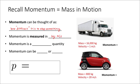Now momentum is a vector quantity, and what that means is that momentum has direction. Momentum involves velocity, and we know velocity is a vector as well. So momentum can be positive or negative depending on the direction the object is traveling in. The formula for calculating the momentum of an object is just that object's mass multiplied by that object's velocity.